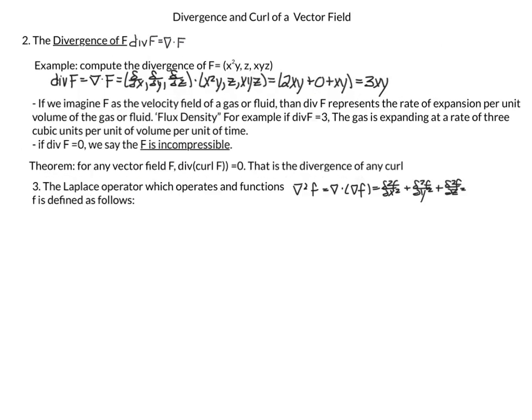We also talked about the divergence of f, notated div f, equal to del dot f. For example, if f = (x²y, z, xyz) then div f = d/dx + d/dy + d/dz dotted with (x²y, z, xyz), and our final answer was 3xy. The physical interpretation of divergence is that it represents the rate of expansion. If div f equals 0, we say that f is incompressible. The theorem states that the divergence of any curl is zero. Last, we define the Laplace operator del squared, which operates on functions and equals del dot gradient of f.